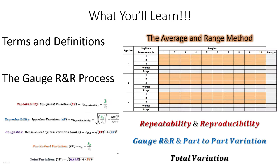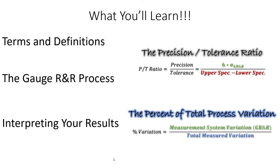In the next video in the series, we're going to go through the average and range method. I'll give you an Excel template with all of the formulas and walk you through how to conduct a gauge R&R and calculate repeatability, reproducibility, gauge R&R, part-to-part variation, and total variation. The third part of this series is all about interpreting your results — is your measurement system capable for its intended purpose? But today is all about the basic terms and definitions in a gauge R&R or measurement system analysis. Let's get into today's lecture.